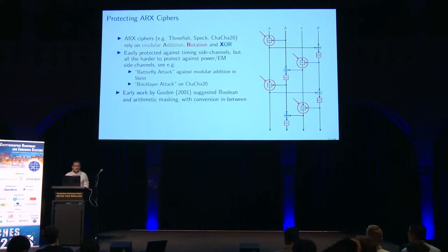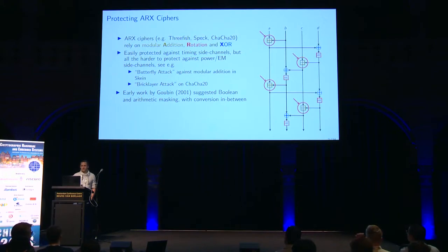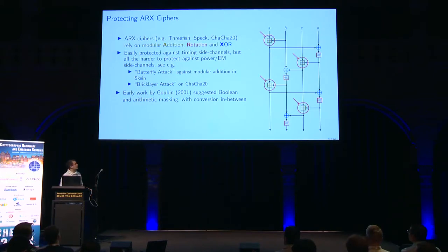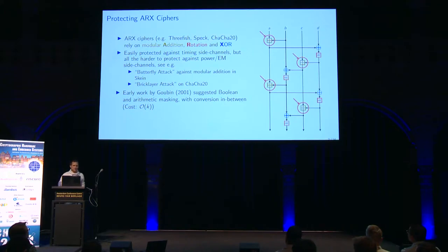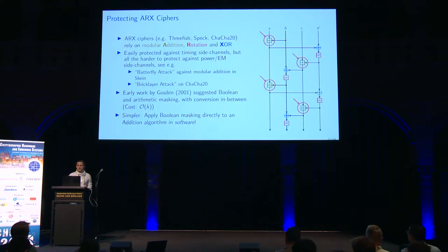Early work on this by Goubin suggested using Boolean masking to protect the rotation and the XOR, and then doing a conversion to arithmetic masking to secure the modular addition. This is quite costly, with a cost of K, K being the bit width of the addition. This was later lowered to log K with the suggestion to apply Boolean masking directly to an addition algorithm in software.